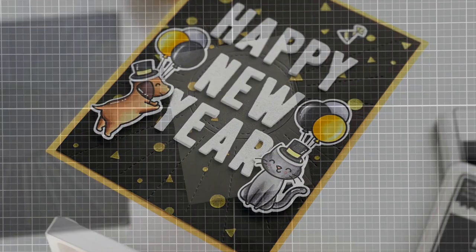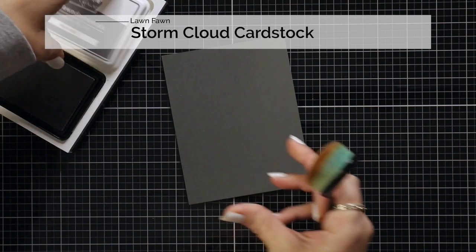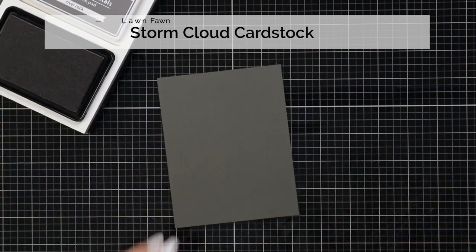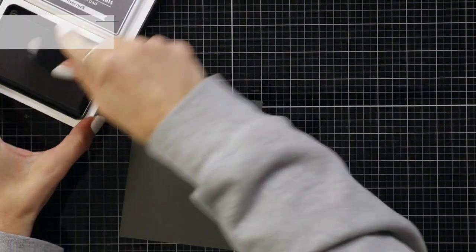To start with I need to allow myself some dry time so I'm beginning my card with my background. I have a piece of storm cloud cardstock cut to four and a quarter by five and a half and I'm going to be doing some ink blending.